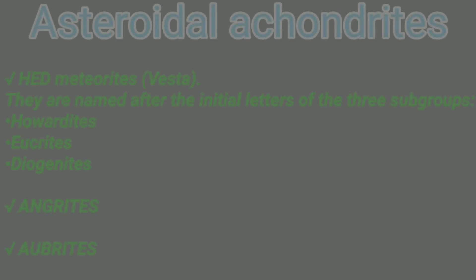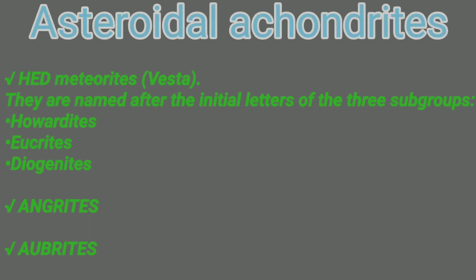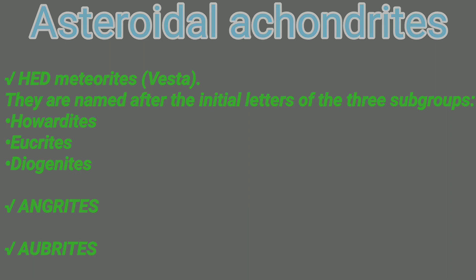Under the Asteroidal Achondrites are HED meteorites, Angrites, and Aubrites. HED meteorites are composed of Howardites, Eucrites, and Diogenites.